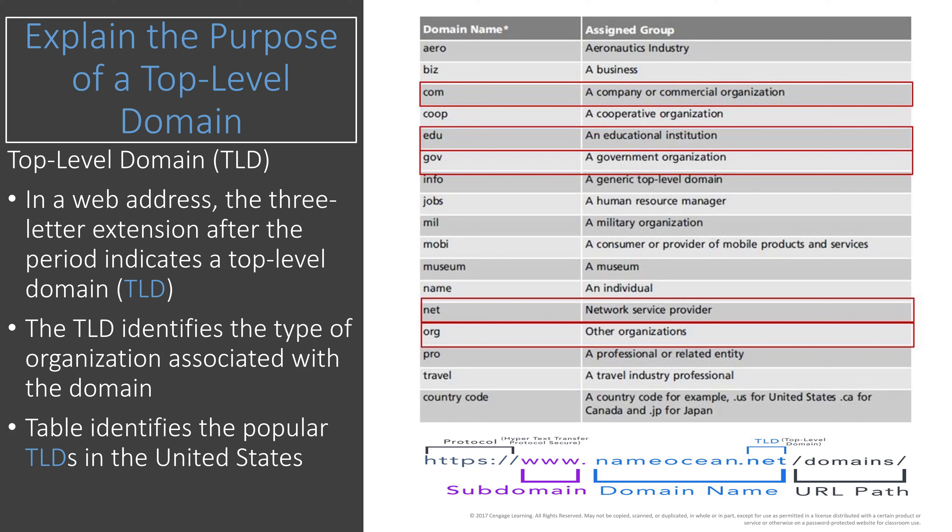When we type www.google.com, looking at the chart, .com stands for a company or commercial organization. Educational institutions use .edu. Other top-level domains include .info, .jobs, .mobi for mobile products and services, and even .museum. These are the older, established top-level domains. By the way, we can now purchase pretty much any unique top-level domain we want — for example, a personal domain like .me.